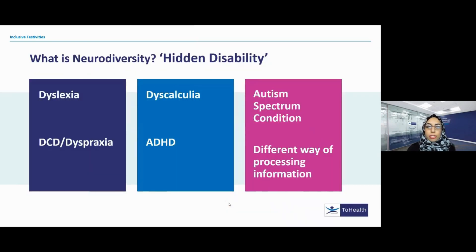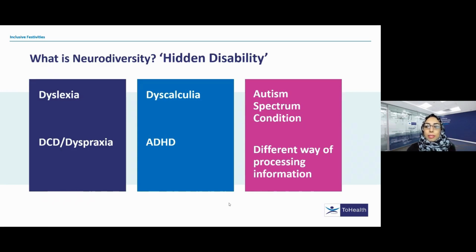Some of the common conditions that come under neurodiversity include dyslexia, dyscalculia, dyspraxia — also called developmental coordination disorder — ADHD, attention deficit hyperactivity disorder, and autism, or autism spectrum condition, also called autism spectrum disorder. Some of these conditions are often referred to as a hidden disability because they're not as obvious as a physical disability. It's important to understand that all of these conditions are neurological or brain-based in origin, and that means that people who are neurodivergent will process information differently.